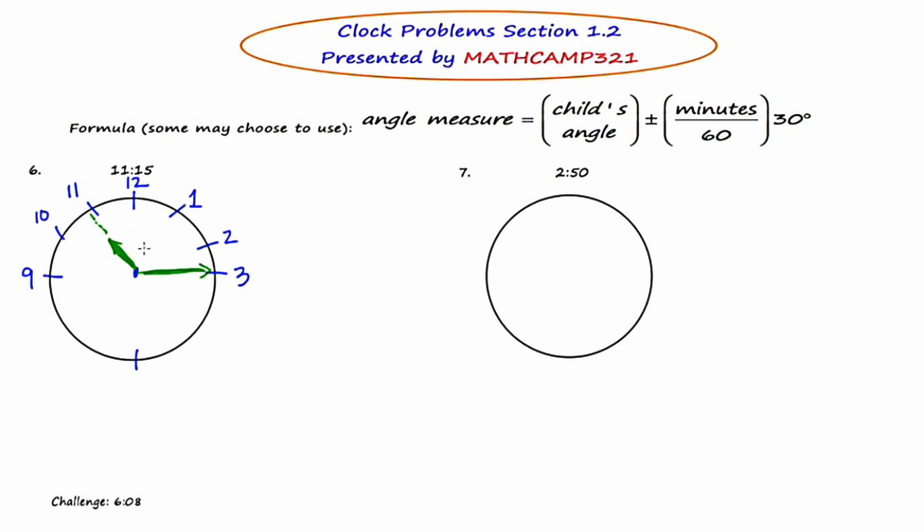Okay, so this is what we're calling the child's angle, and I might section this off so I can see exactly how many sections I'm working with. And it looks to me like I have one, two, three, four. Four sections at 30 degrees each is going to be a child's angle of 120 degrees.